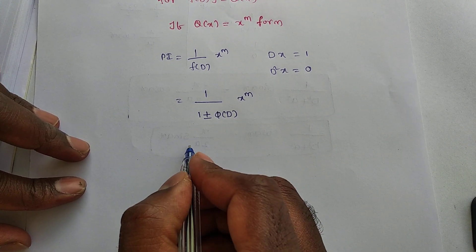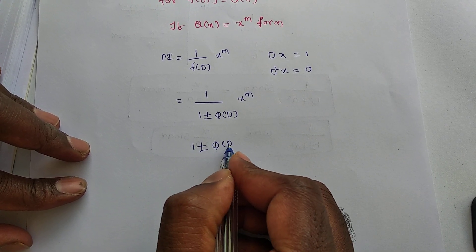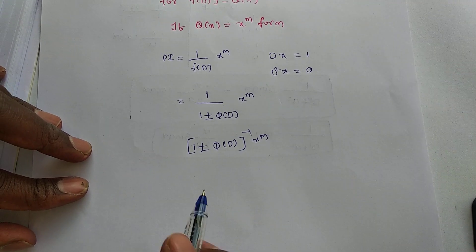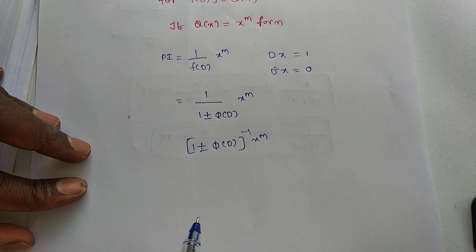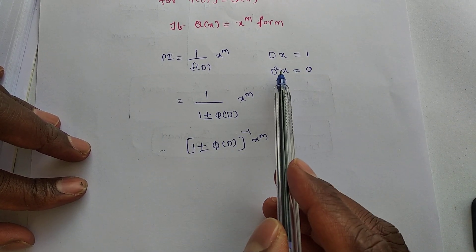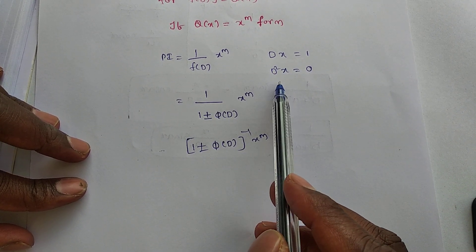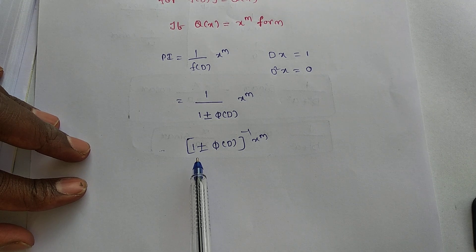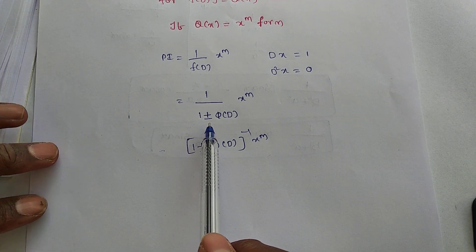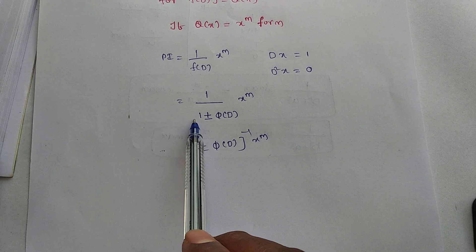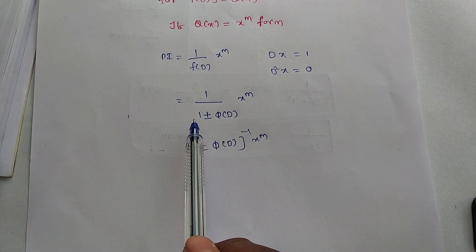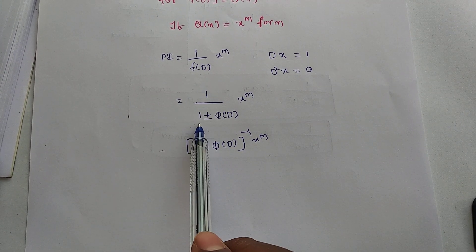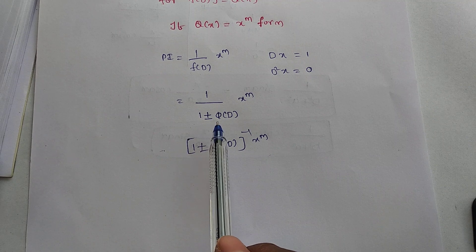We write f(D) in the form [1 ± φ(D)]^(-1) acting on x^n, then apply the binomial expansion. The reason we cannot simply replace D is that D, D², D³ values are not directly substitutable here. To get the 1 ± φ(D) form, take the lowest degree term in f(D) as a common factor.